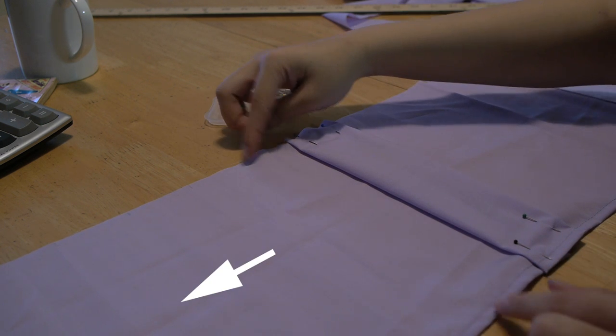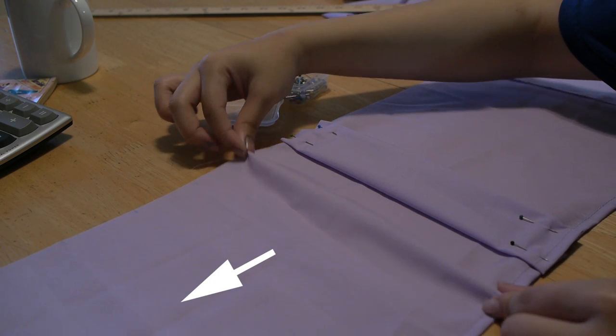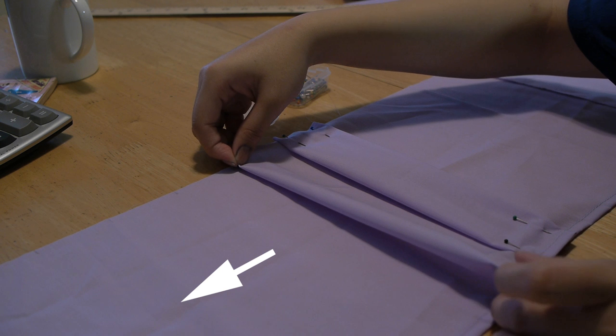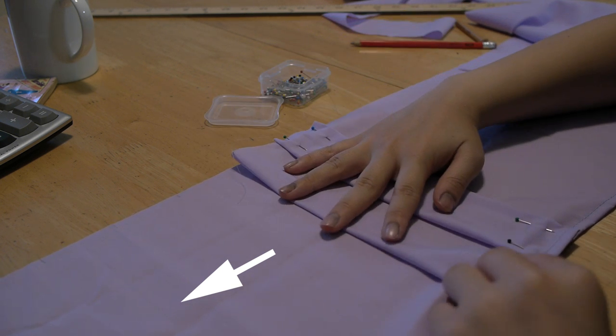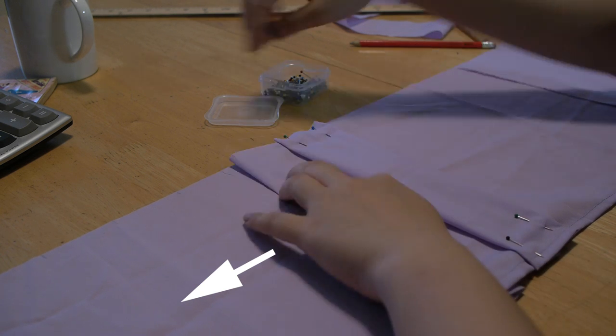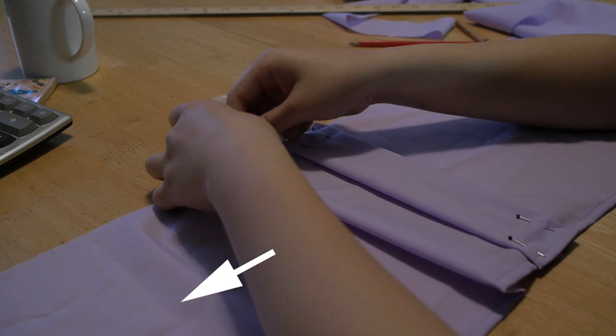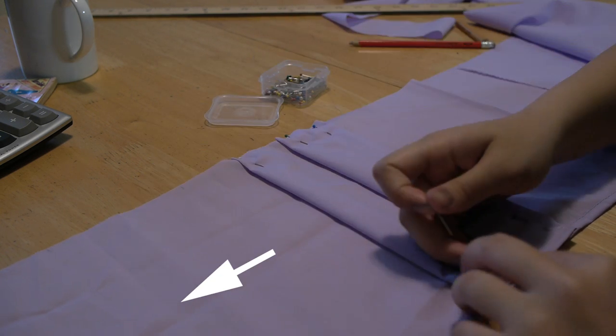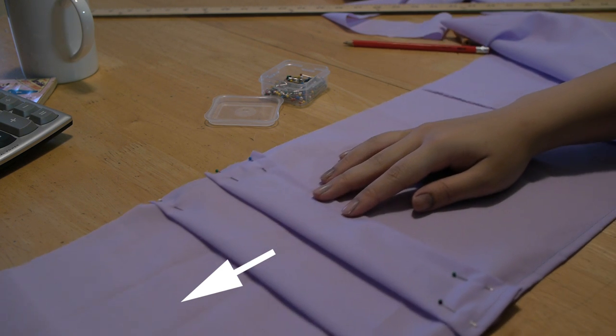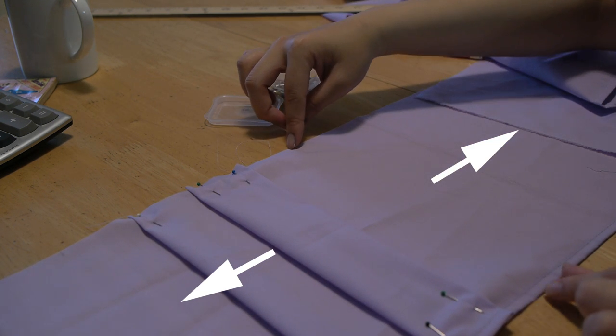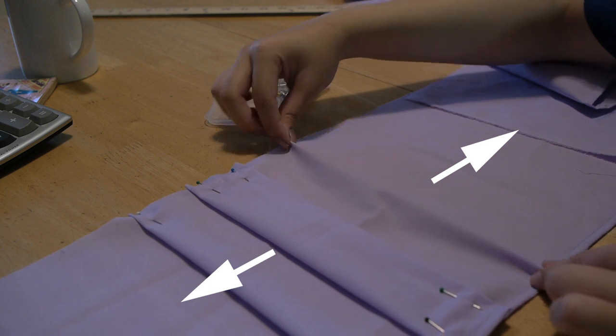Now you're going to start side pleating. Take the next mark on either side of your box pleat and bring it to the adjacent mark. Repeat on the other side of your box pleat until you reach the end of your fabric.